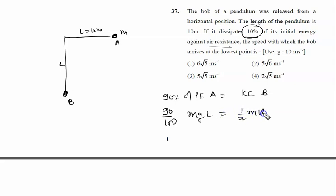equals half m v squared. m cancels, so v squared equals 9 times 2, that's 18 by 10, times gravity which is 10, times length which is also 10. So v squared equals 180. Now we calculate v, which is root 180.